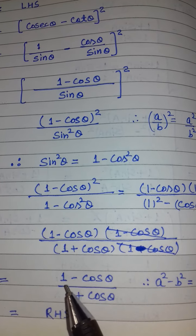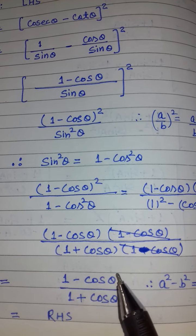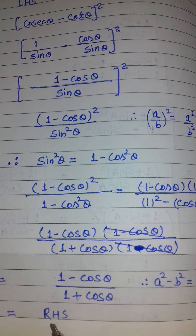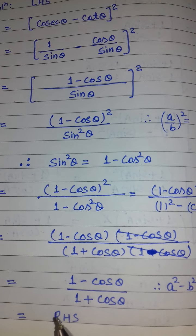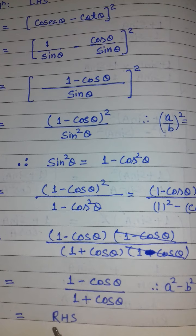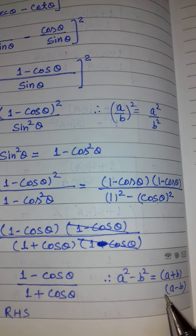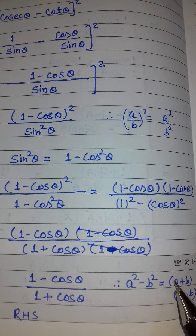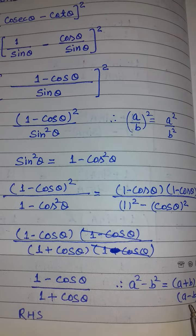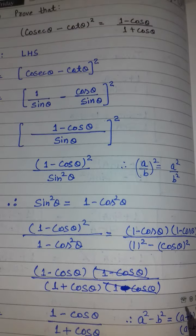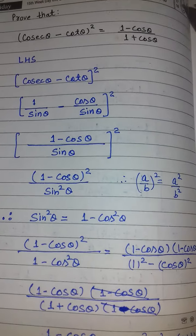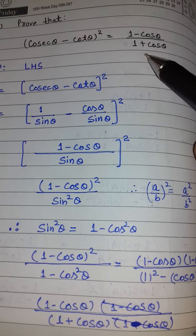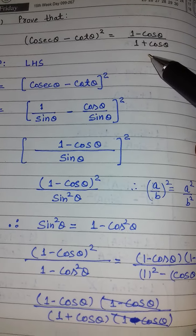तो हमारे पास result आएगा: (1 − cos θ) upon (1 + cos θ)। और यही हमें prove करना था — left hand side equals right hand side. The identity a² − b² = (a + b)(a − b) was used here.